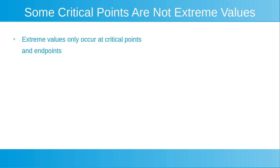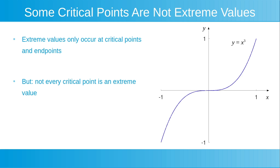Extreme values only occur at critical points and endpoints, but not every critical point is an extreme value. Shown to the right is a plot of the continuous function y is equal to f of x is equal to x cubed, plotted on the closed interval from minus 1 to 1. The derivative of this function f'(x) is equal to 3x squared. This derivative is equal to 0 at the point where x is equal to 0, so this function has a critical point at x is equal to 0. But this function does not have an extreme value there — there is no maximum or minimum at the point where x is equal to 0.